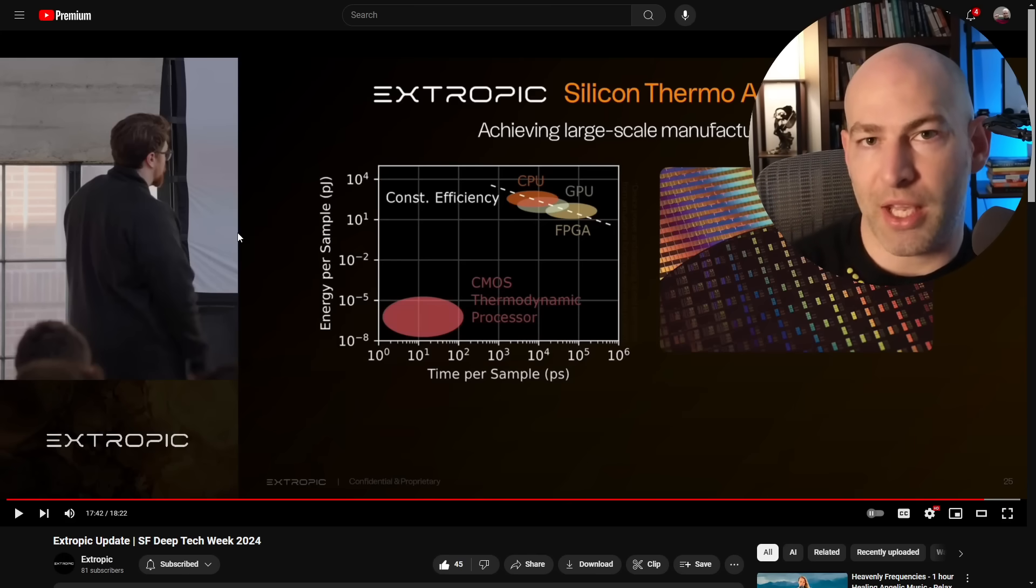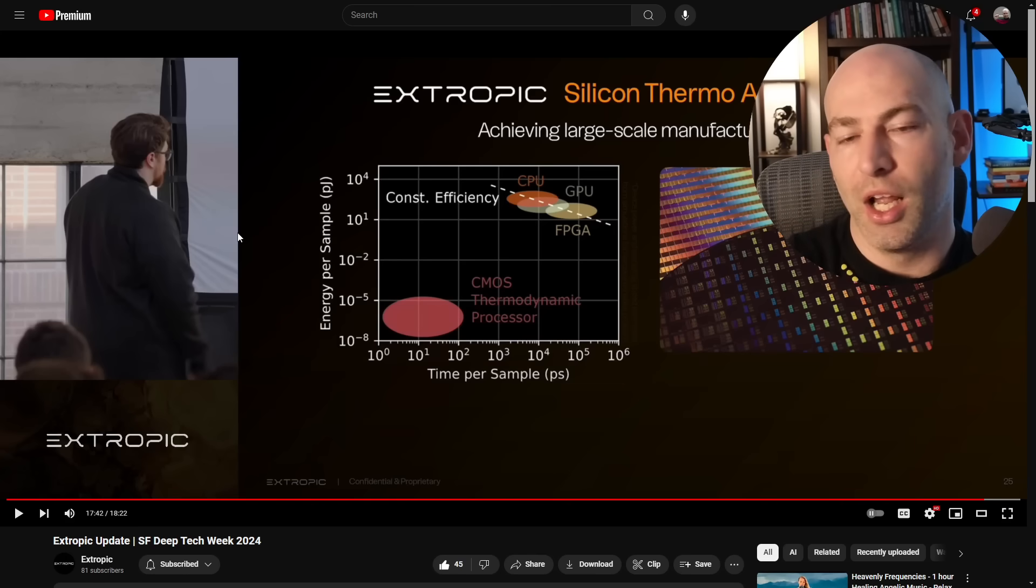Now, pretty much all you need to do to make anything work, any machine work, is an energy gradient. And thermodynamic computing uses a thermodynamic gradient or a thermal gradient in order to just intrinsically process. Now, what this does is it drastically lowers the cost of compute in terms of the amount of watts that you put in versus the amount of instructions that you get. And that has been going down exponentially as Moore's Law has been going up exponentially. This is a paradigm shift.